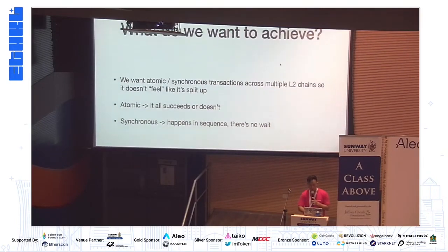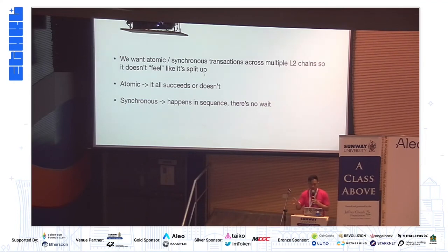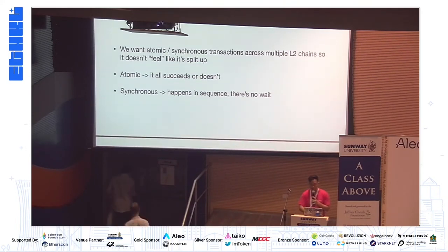What do we want to achieve? We want atomic and synchronous transactions across multiple L2 chains, so it doesn't feel like it's splitting up. Atomic means that a transaction either succeeds or it doesn't — for example, in a regular Solidity smart contract, if a function gets reverted, every state change before that doesn't get mined at all. Synchronous means it happens in sequence, so all transactions between multiple L2s happen in sequence with no wait between the two L2 transactions.